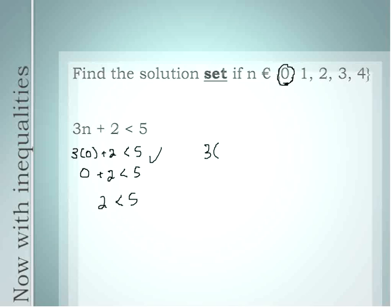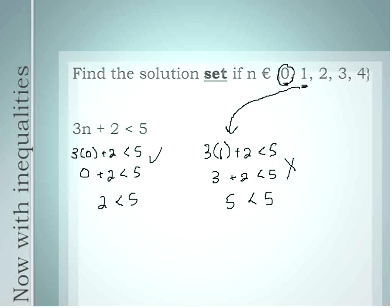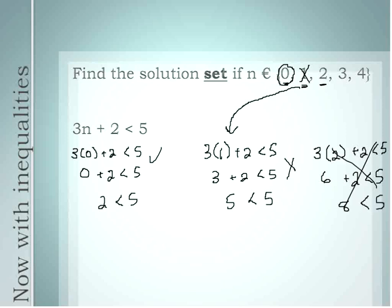Let's go on to the next number, 1. 3 times 1 plus 2 is less than 5. 3 times 1 is 3, and 3 plus 2 is 5. But 5 is not less than 5 — 5 is equal to 5 — so this one gets an X and is not part of our solution. Let's go on to the number 2. 3 times 2 plus 2 is less than 5. 3 times 2 is 6, and 6 plus 2 is 8. 8 is definitely not less than 5, so this one also gets an X.